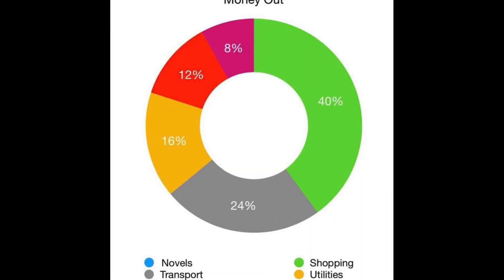A pie chart is a circular graphic. You can see it has a circular shape. And also, it is divided into slices. Slices are different to illustrate numerical proportions.